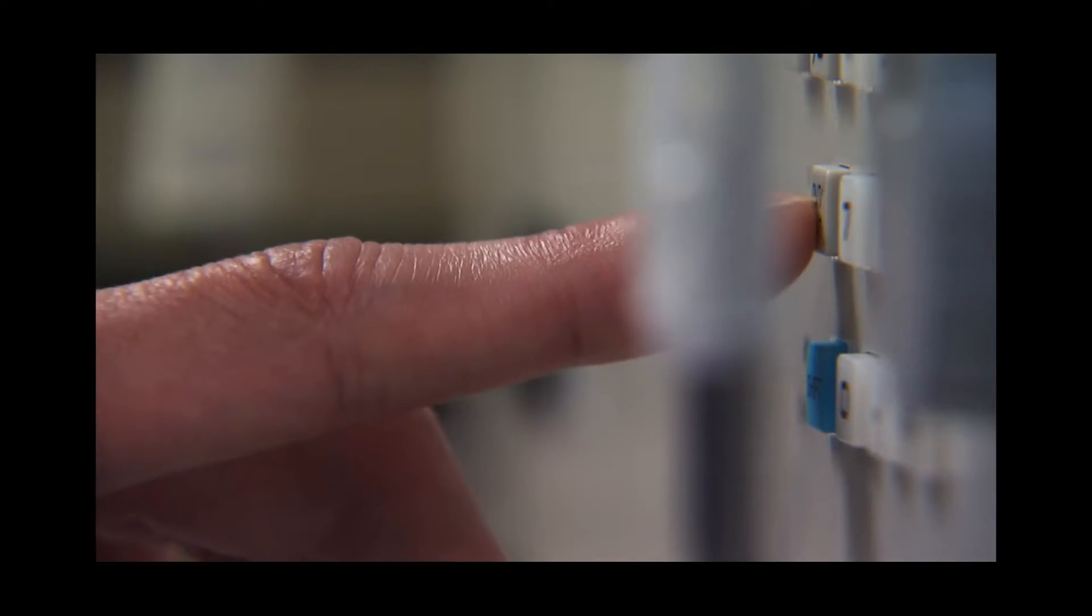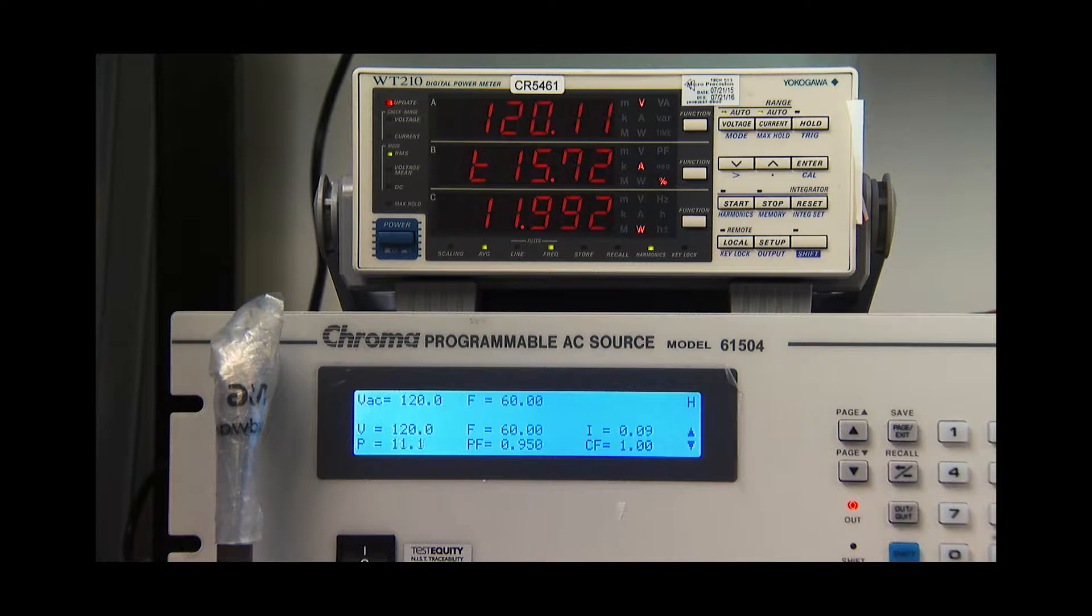Now let us look at the reading from the power meter. As you can see, the board achieves PF greater than 0.9 and the THD is below 20%, meeting the requirement for commercial and industrial lighting application.